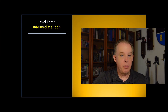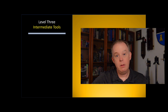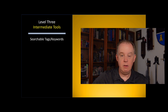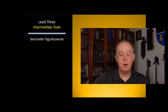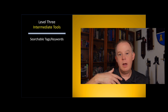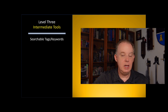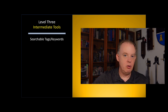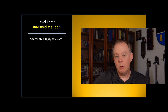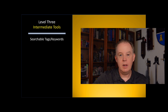Now we move on to level three, where we start introducing intermediate tools. Perhaps most important is the ability to tag or identify notes with keywords — terms that are roughly synonymous depending on the manufacturer — which you can then search. So not only do you have notebooks with different names, but you have a way within a notebook to identify key things you want to recall later without manually searching. That's a really important step in the complexity of note-taking devices.